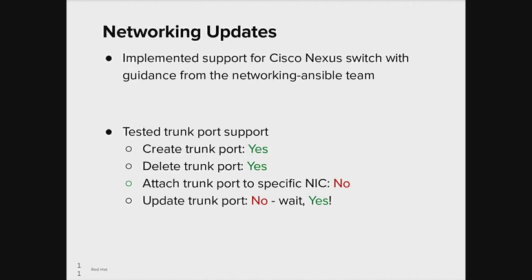Onto networking. We started by adding support for the Cisco Nexus switch into ML2 Ansible networking with guidance from the upstream networking Ansible team. They were great at helping us understand what we needed to do and helping us merge our code. Next, we tested trunk port support. We discovered that Neutron already supported the creation and deletion of trunk ports. However, we couldn't attach a trunk port to a specific NIC, so that's a feature we added — actually in Ironic.